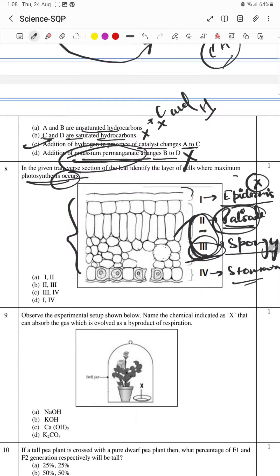So both of them will be responsible for photosynthesis. Stomata is responsible for only exchange of gases. So option B is your answer.